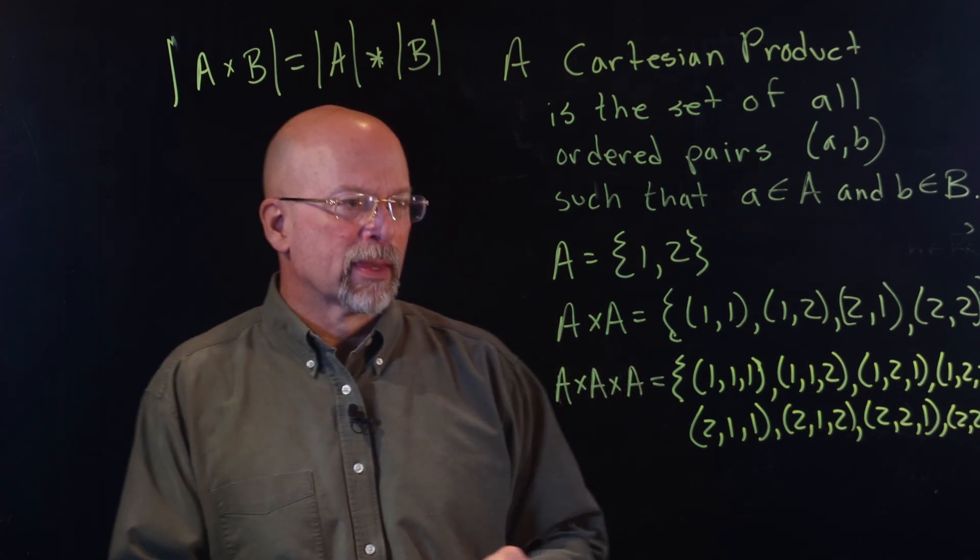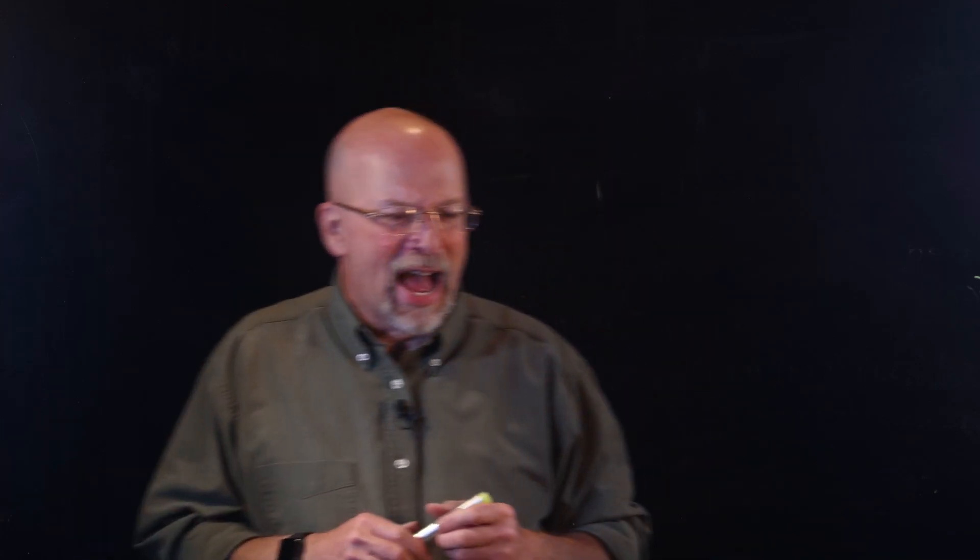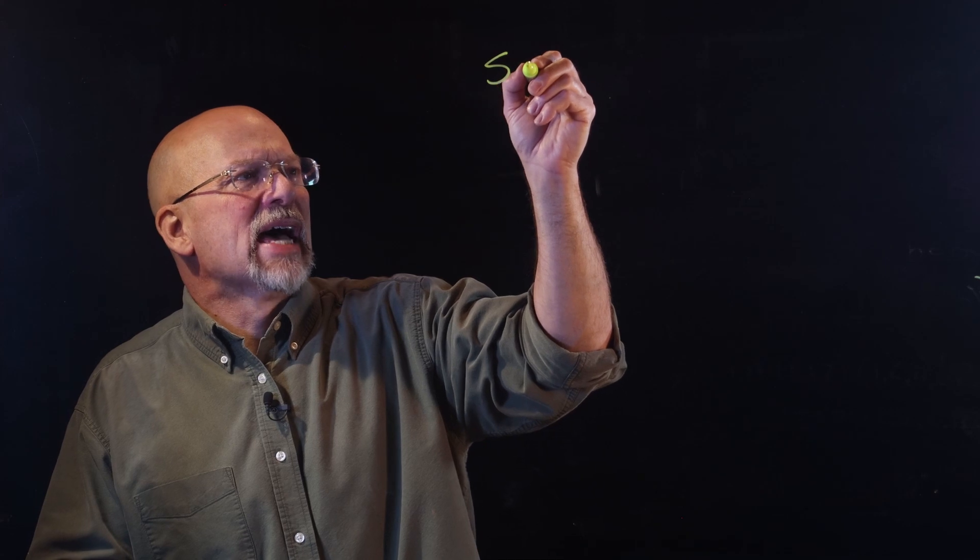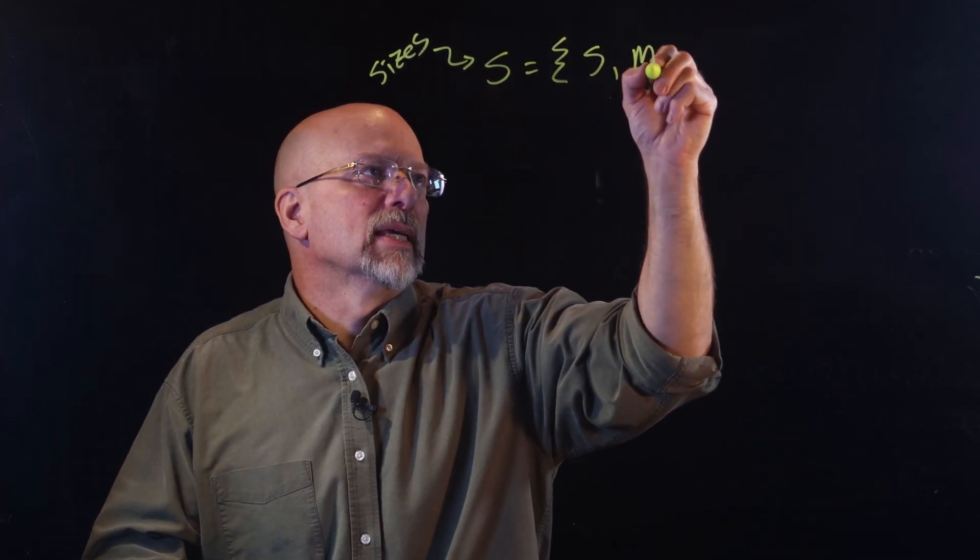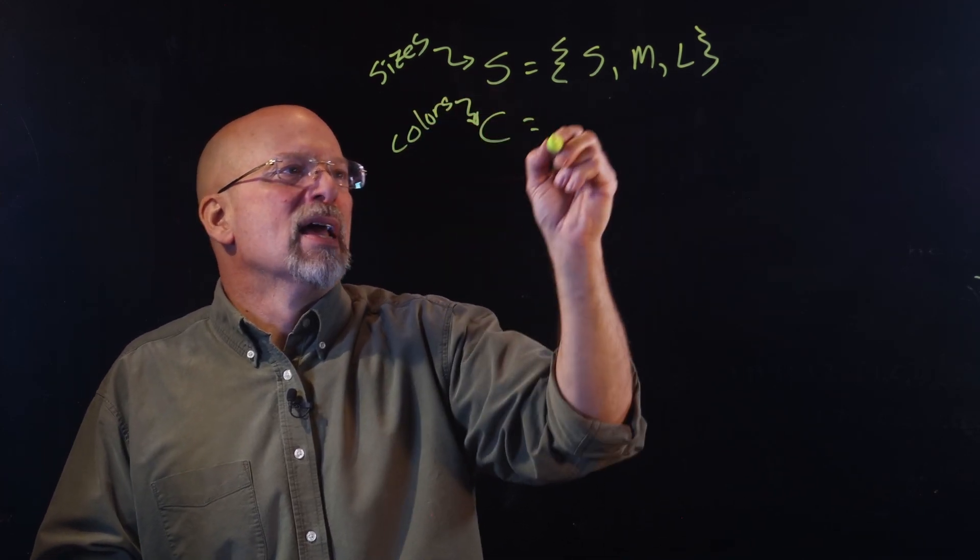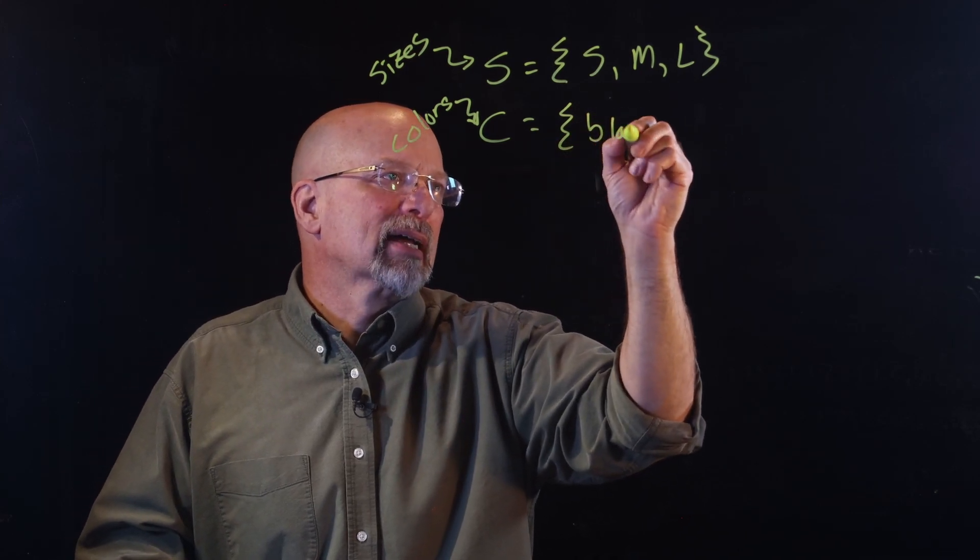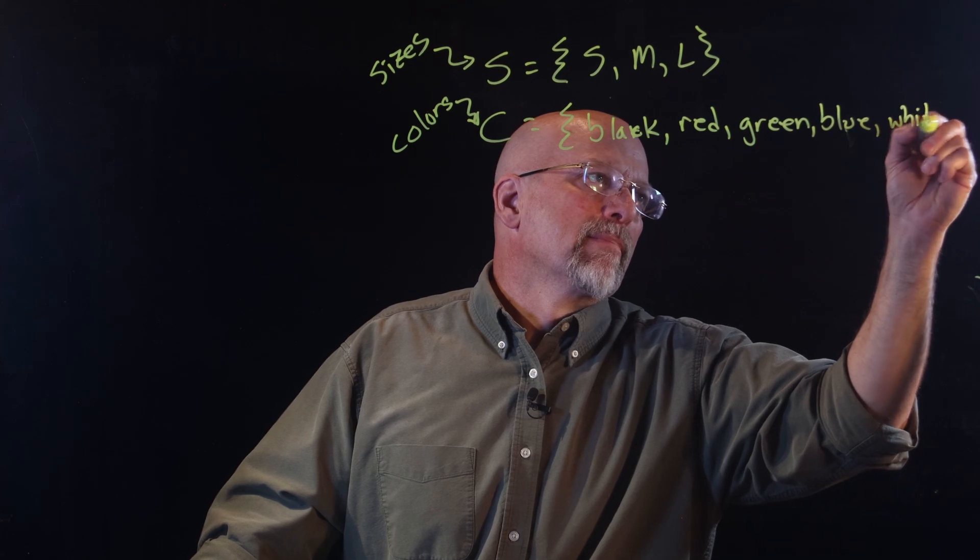Let me erase this board. I'll show you one more example. Let's say that I am a manufacturer of shirts. And what I want to do is I want to figure out all the combinations of shirt sizes and shirt colors that I can make for a particular style. So I have one set S, which is going to be the sizes that are available for our shirt. So I can say small, medium, large. Yes, I realize there are more sizes than that, but let's keep it simple. And let's say that I have another set called colors. And colors might be, I don't know, how about black, red, green, blue, and white.